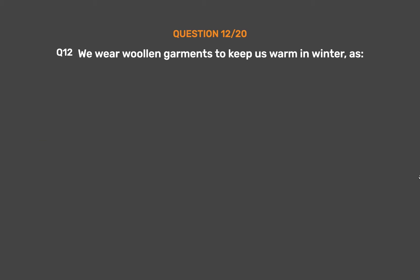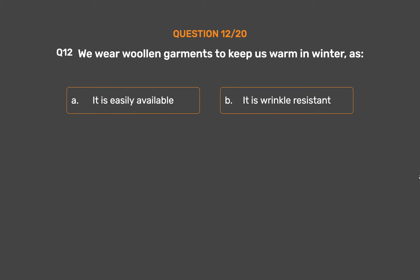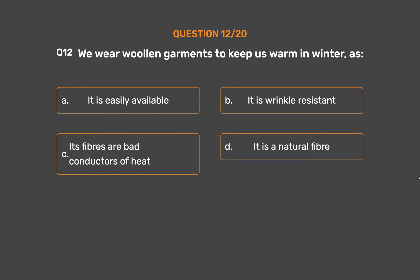Question number 12. We wear woolen garments to keep us warm in winter because: Option A, It is easily available; Option B, It is wrinkle resistant; Option C, Its fibers are bad conductors of heat; Option D, It is a natural fiber.